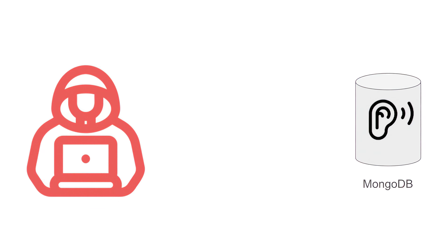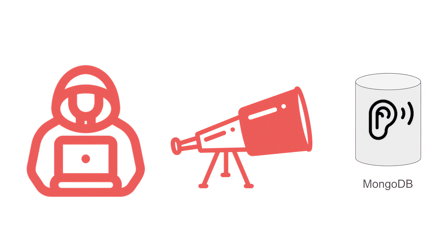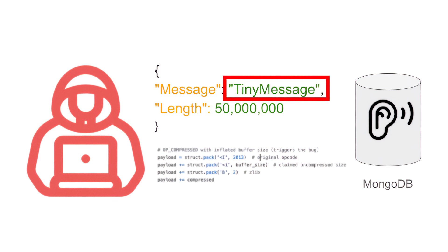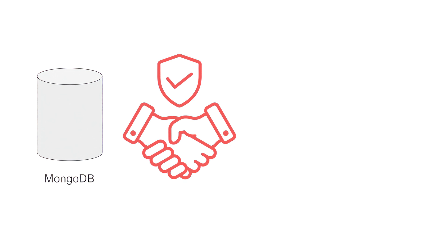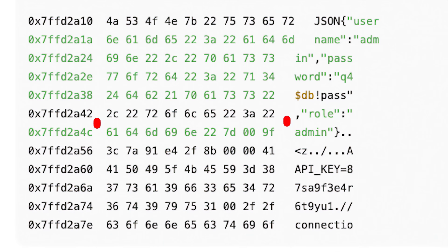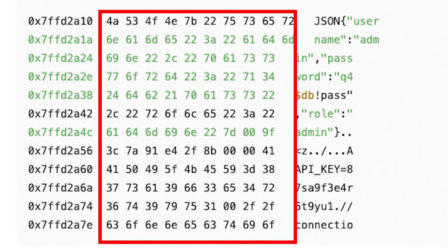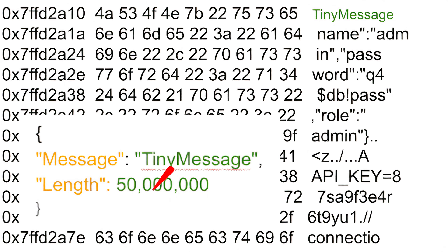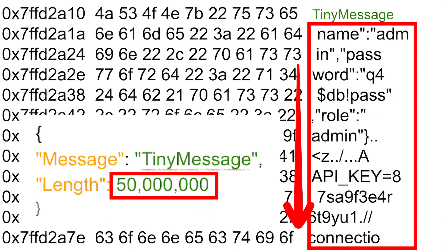It's really no different than asking for one credit card and then handing back the entire wallet. The attacker finds a MongoDB server exposed to the internet — this isn't magic, it's regular port scanning that happens every day. They send mismatched length fields in their request: a small compressed message with a note claiming the response should be a large uncompressed size of data. The MongoDB server trusts the user-provided length and creates a large buffer in memory to hold the decompressed data. The actual compressed data sent by the attacker is small, so when it's decompressed it doesn't fill the whole allocated memory buffer — and the server hands back whatever was in that buffer.